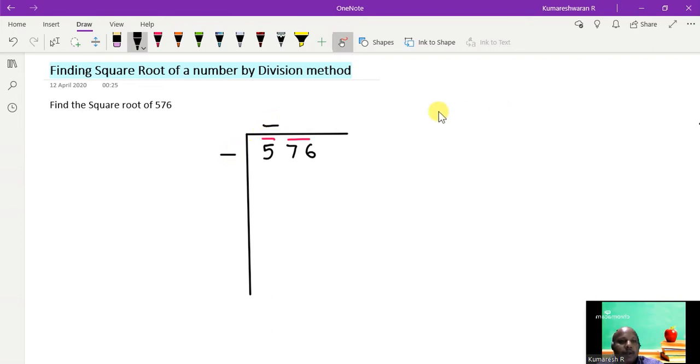So let me think of 1, whose square is 1 into 1 is 1, and this is less than 5. So I can still increase it a little bit. Then I can think of 2, whose square is 4 and less than 5.